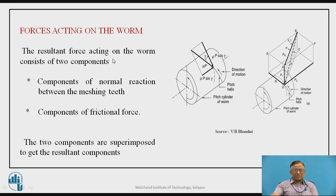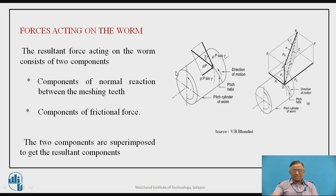The resultant force acting on the worm consists of two components: the normal reaction between meshing teeth and the frictional force. Force analysis of the worm is different from other gears because the worm is a helical screw and linear motion is converted into rotary motion of the worm wheel, making sliding friction predominant.